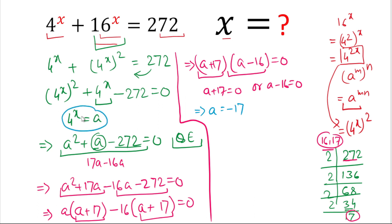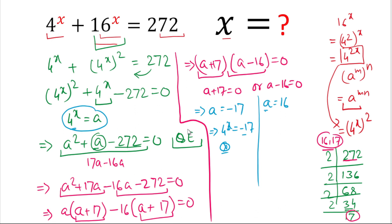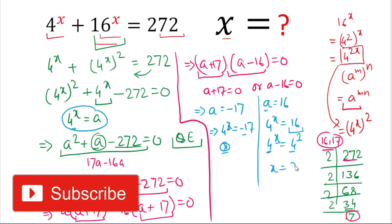Substituting back, 4 to the power x equals minus 17. Since an exponential expression cannot be negative, this value is not real and we discard it. From the second equation, a equals 16, so 4 to the power x equals 16. Since 16 is 4 squared, we write 4^x equals 4 squared. The bases are the same, so the exponents must be equal, giving us x equals 2. This is our answer.